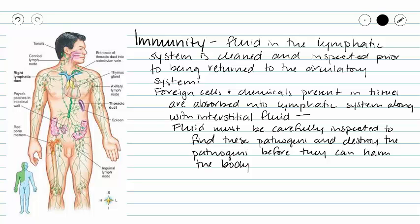These fluids are going to contain hormones, electrolytes, cell products, and all of that good stuff. But they may also contain foreign cells, chemicals, and pathogens that have made it into our tissues. So before this fluid can be returned to the circulatory system, it is inspected very carefully and cleaned by different parts of our lymphatic system to ensure that none of these foreign cells or pathogens freely wander our body. Our lymphatic system houses many immune cells and functions in both nonspecific and specific immunity.